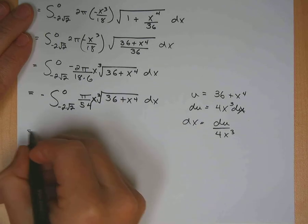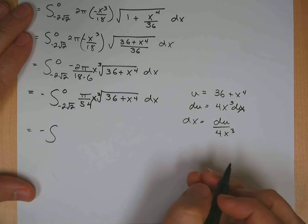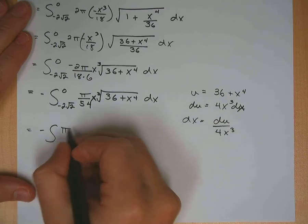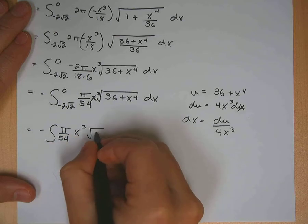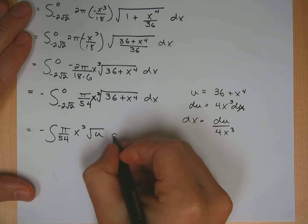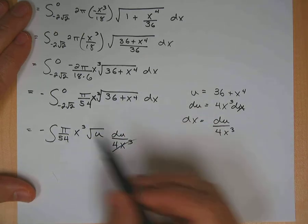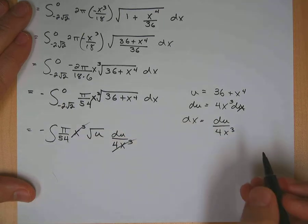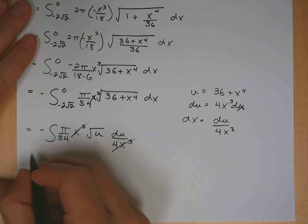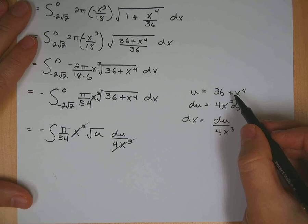Okay. My limits are going to change as well. So let's go ahead and put a negative. Leave off the limits for a second. Pi over 54 x cubed. Square root of u. That's my new inside of the radical there. And we have du over 4x cubed. That will conveniently cancel there. 4 times 54 would be a 216. We'll do that. Let me put my limits in there first.